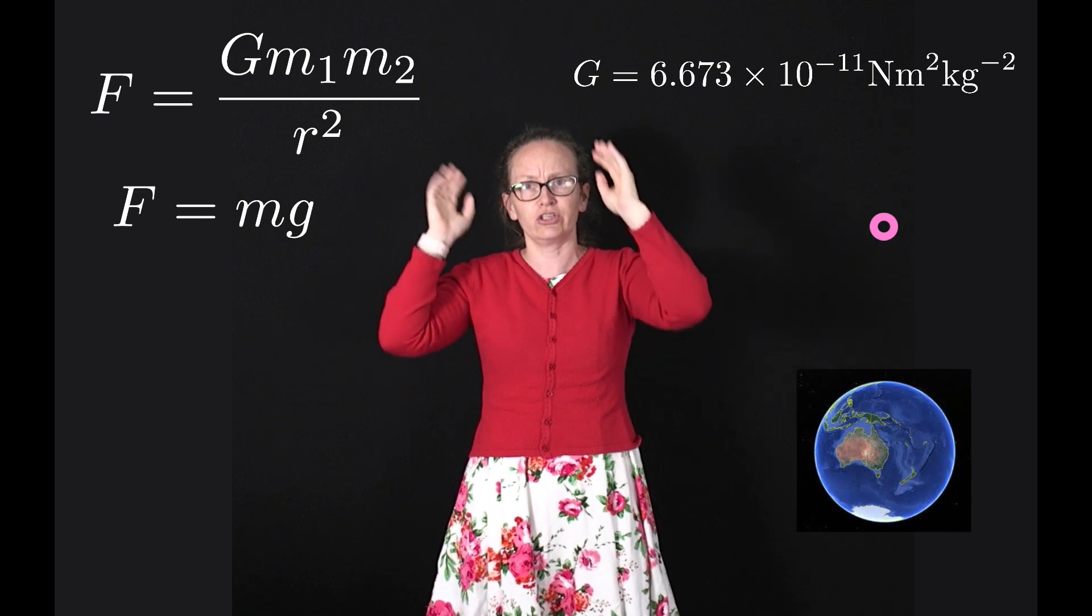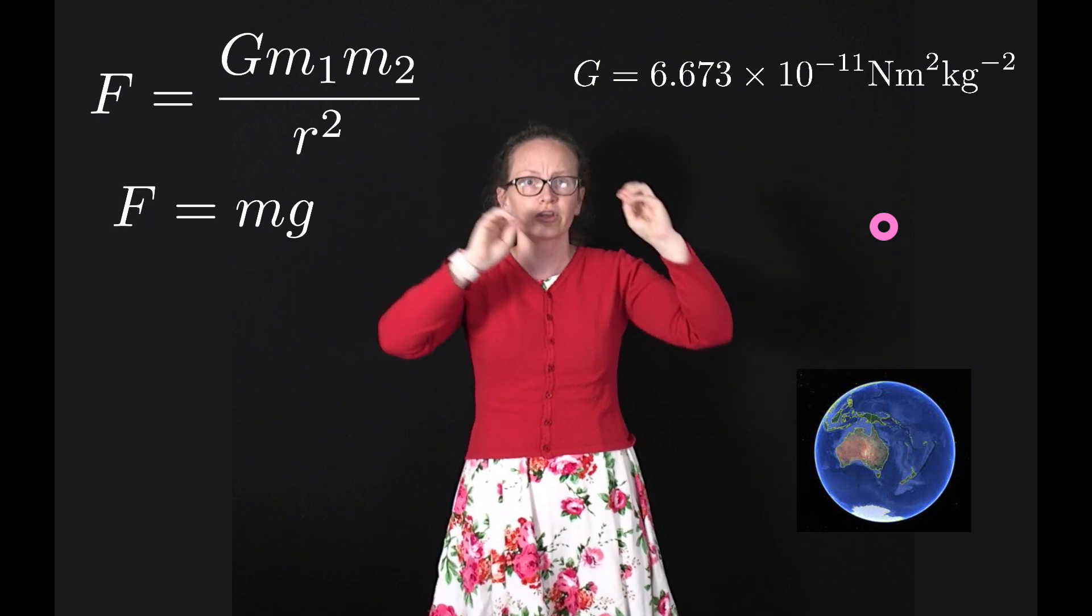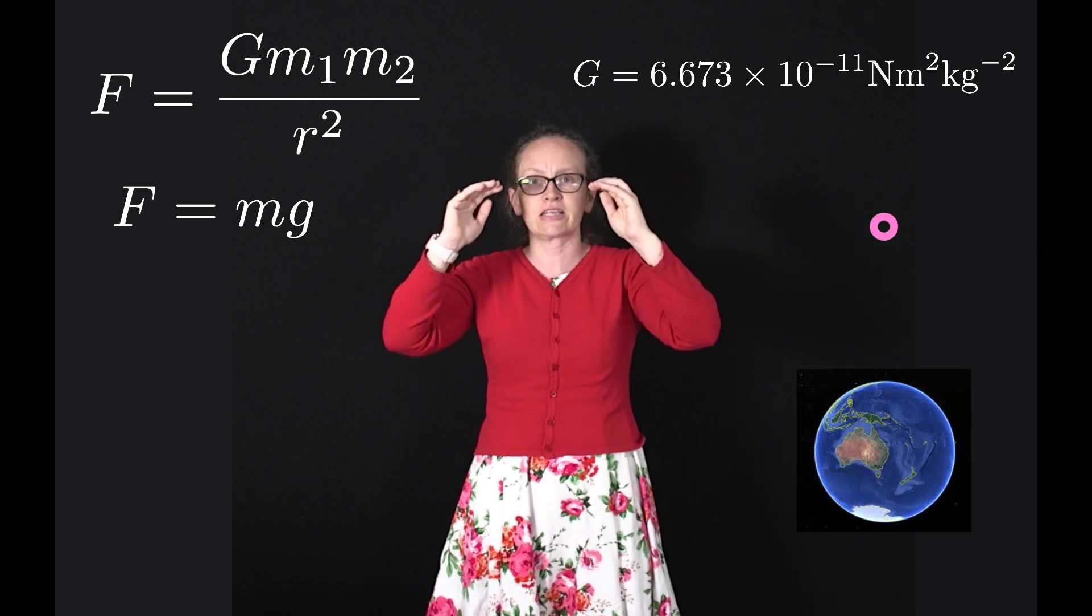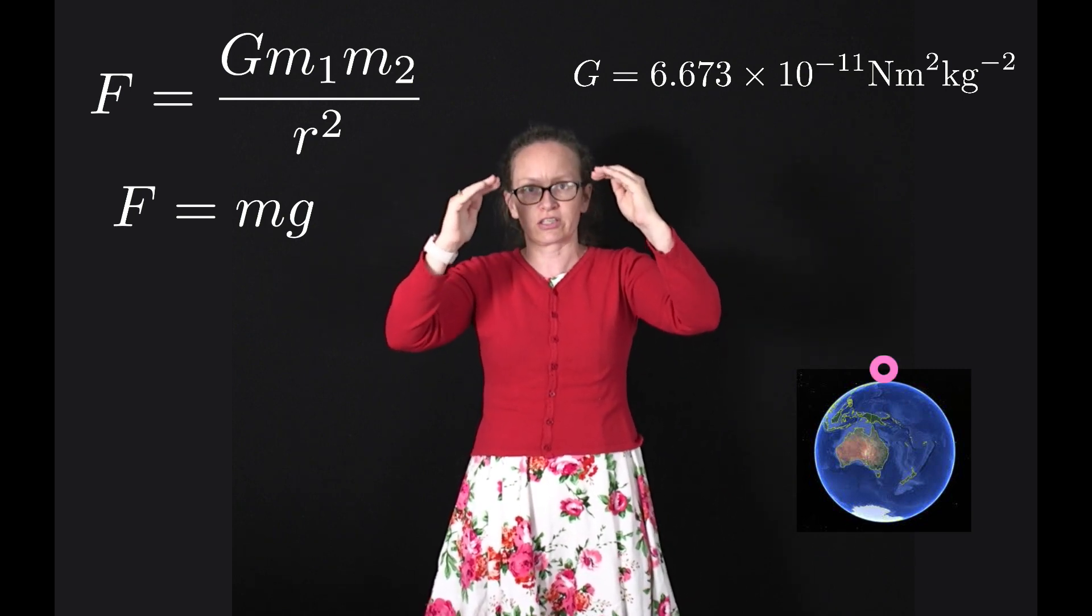We can actually relate Newton's law of universal gravitation to the equation we've been using, mg, by considering what's going on near the surface of the Earth.